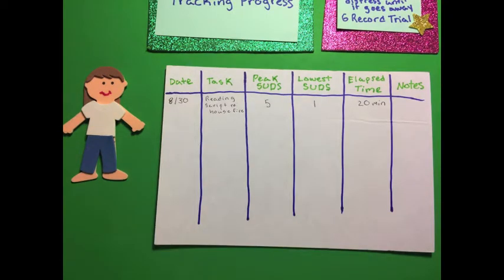Now I filled in a sample record of a particular exposure trial. So in this one I said that the date is August 30th, that the task was reading a script about a house fire, that the highest level of distress was a 5, the lowest level was a 1, and that it took 20 minutes from when I started reading the script to when my anxiety got to a 1 and I ended the trial.